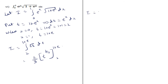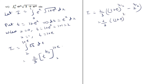So i = (2/3)[(1+e)^(3/2) − 2^(3/2)]. Since 2^(3/2) = 2√2, the value of the given integral is (2/3)[(1+e)^(3/2) − 2√2].